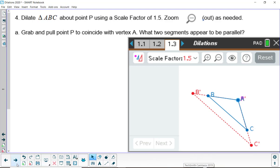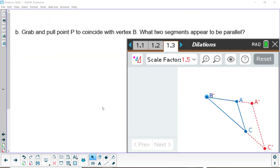So what segments appear to be parallel? I think you got it. For B, if we put point P to coincide with vertex B, which segments appear to be parallel? AC and A prime C prime.